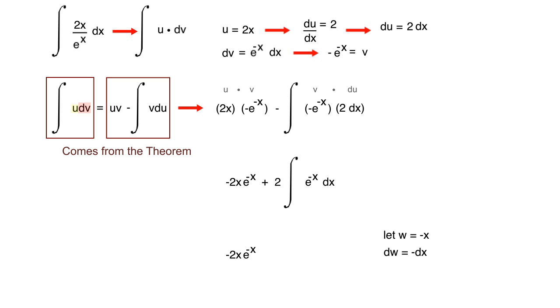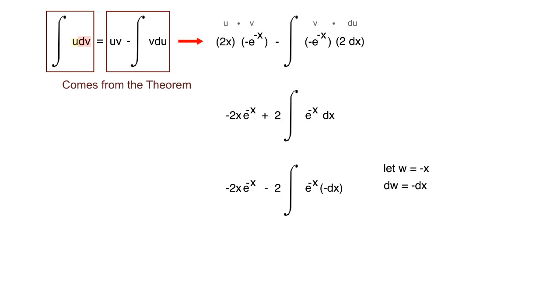After doing this, what you have is negative 2x e to the negative x minus 2 times the integral of e to the negative x times negative dx. We have e to the w dw inside of our new integral, and we can just plug them in directly.